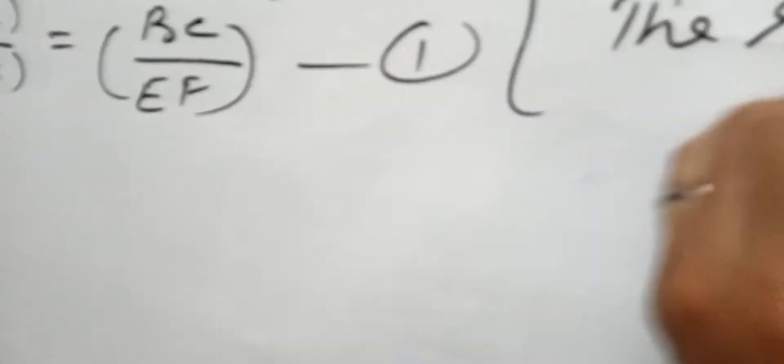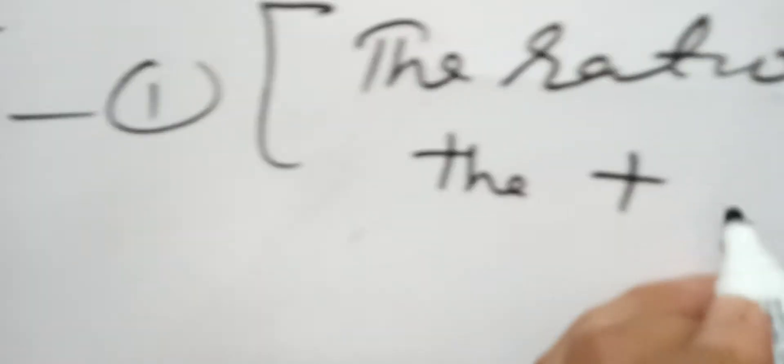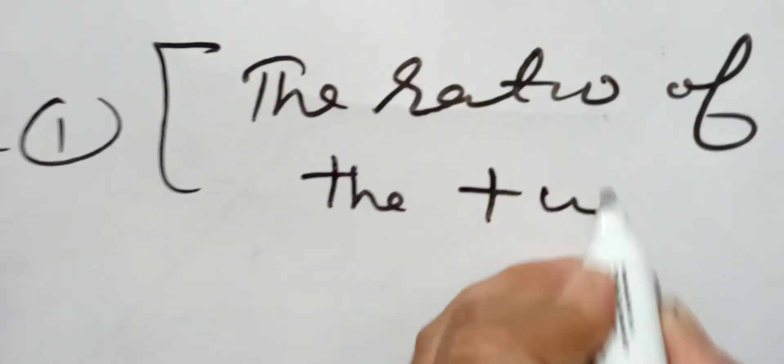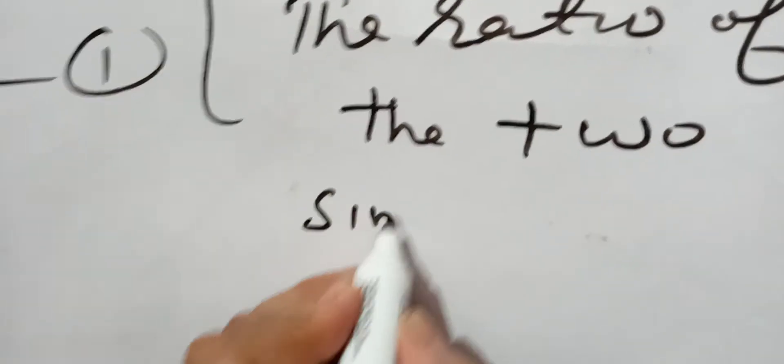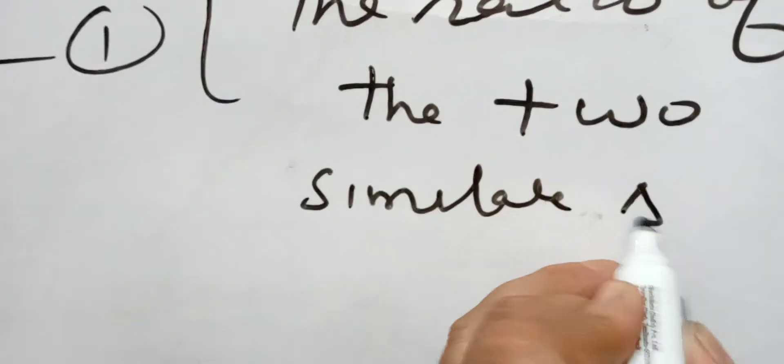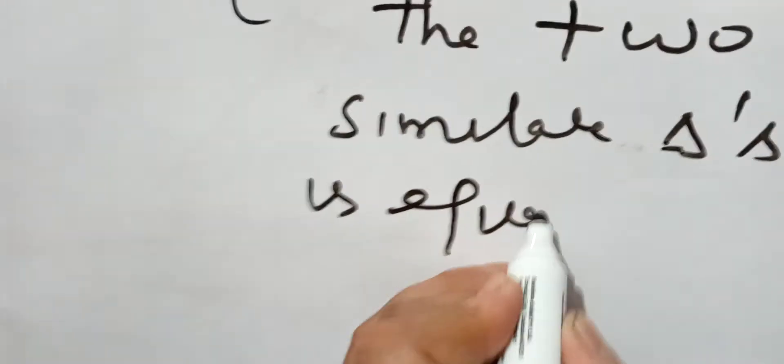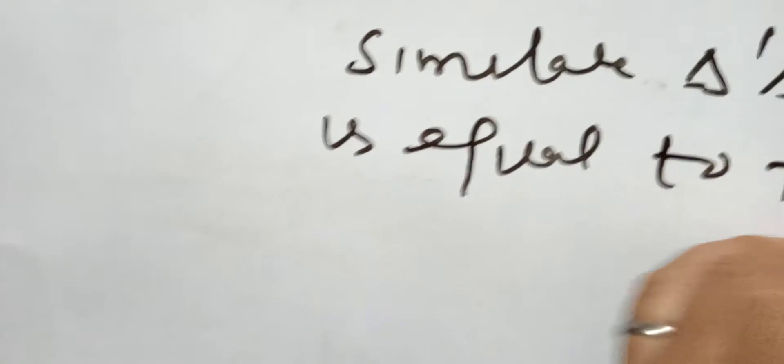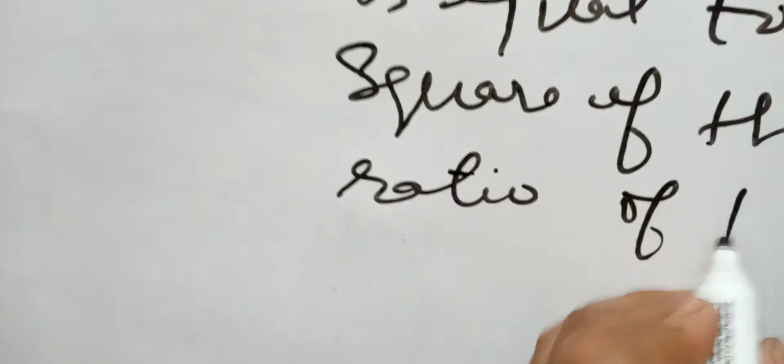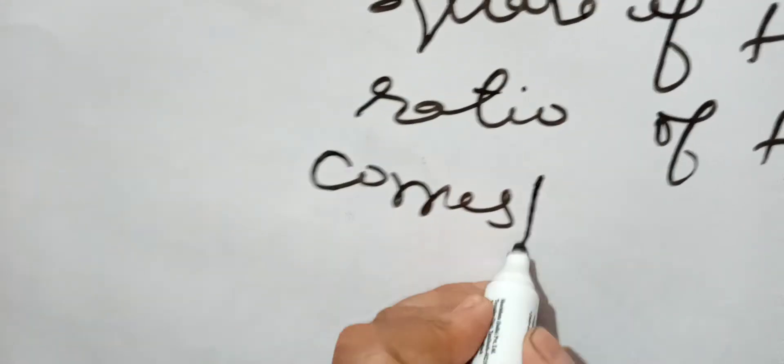The ratio of the two similar triangles is equal to the square of the ratio of their corresponding sides.